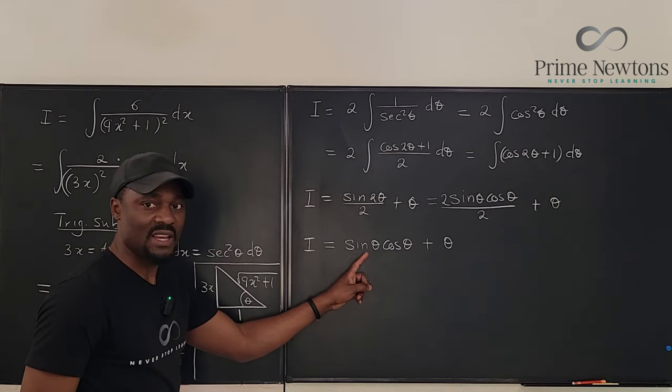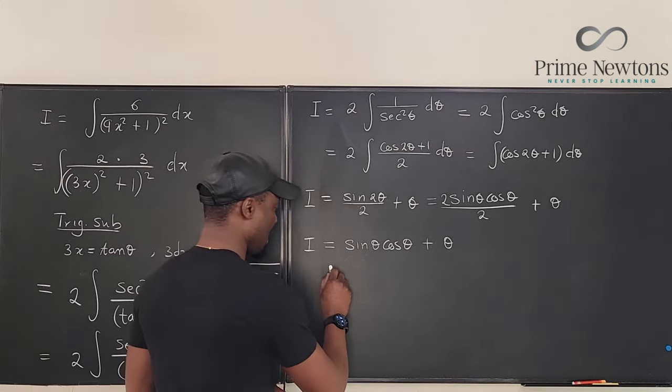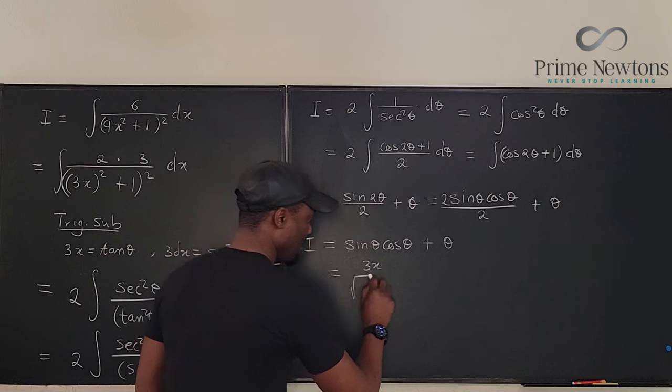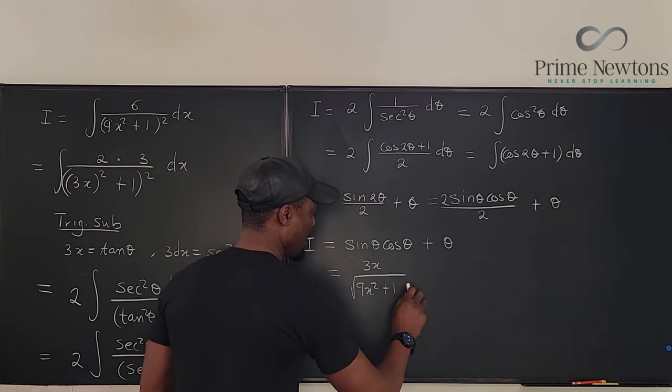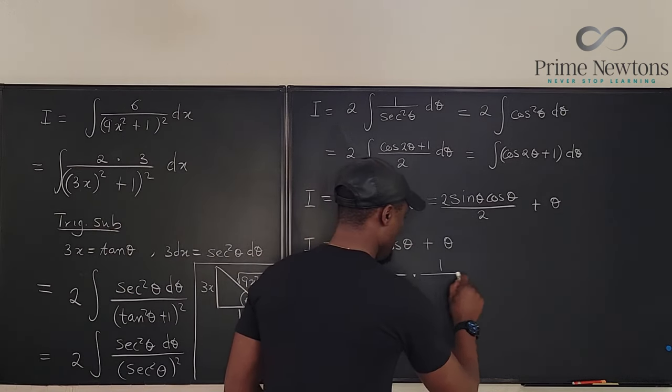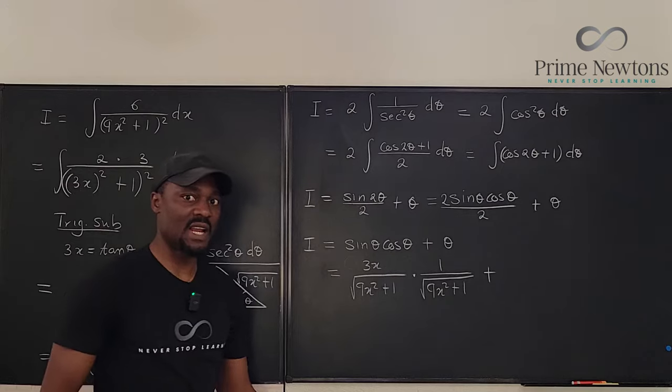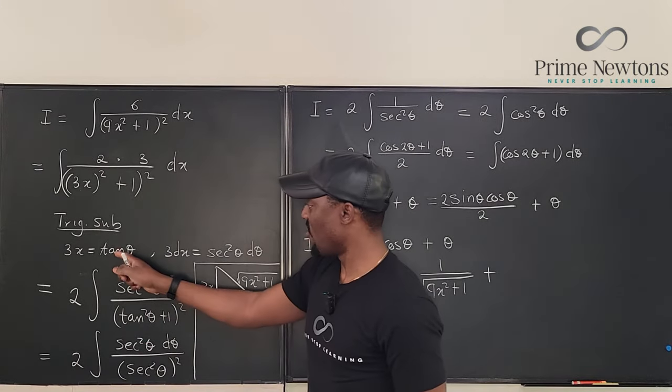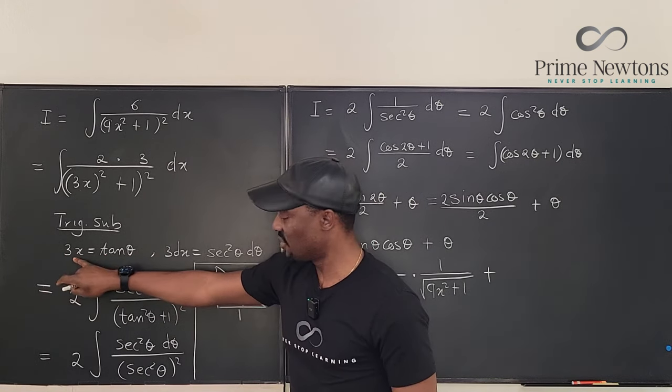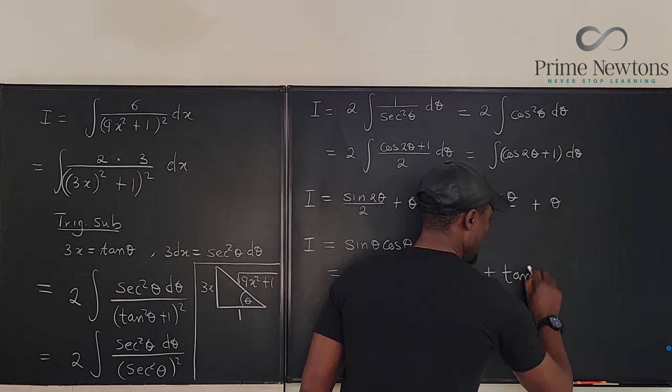Now let's go get everything. What is sine theta from this triangle? Sine theta is opposite over hypotenuse. So we can say our answer is 3x over the square root of 9x squared plus 1 multiplied by what is cosine: adjacent over hypotenuse, 1 over the square root of 9x squared plus 1. What is theta? If you want to find theta you just take the arc tan of both sides and what you get is arc tan of 3x.